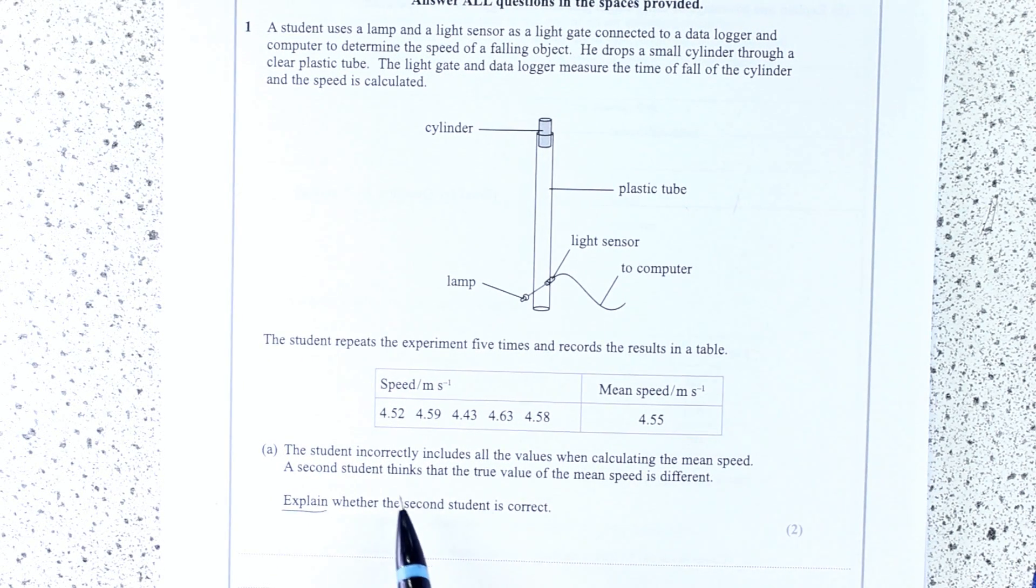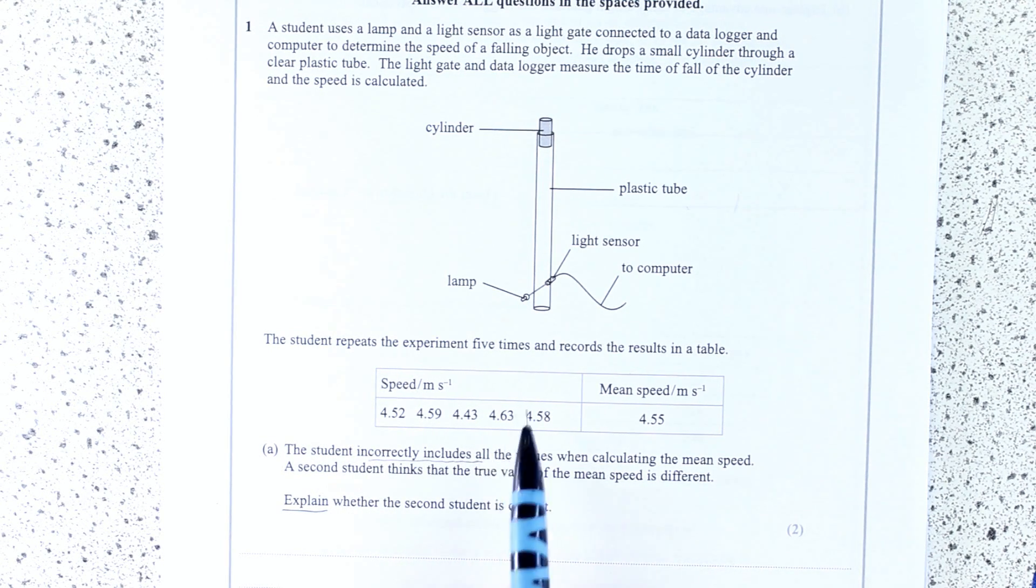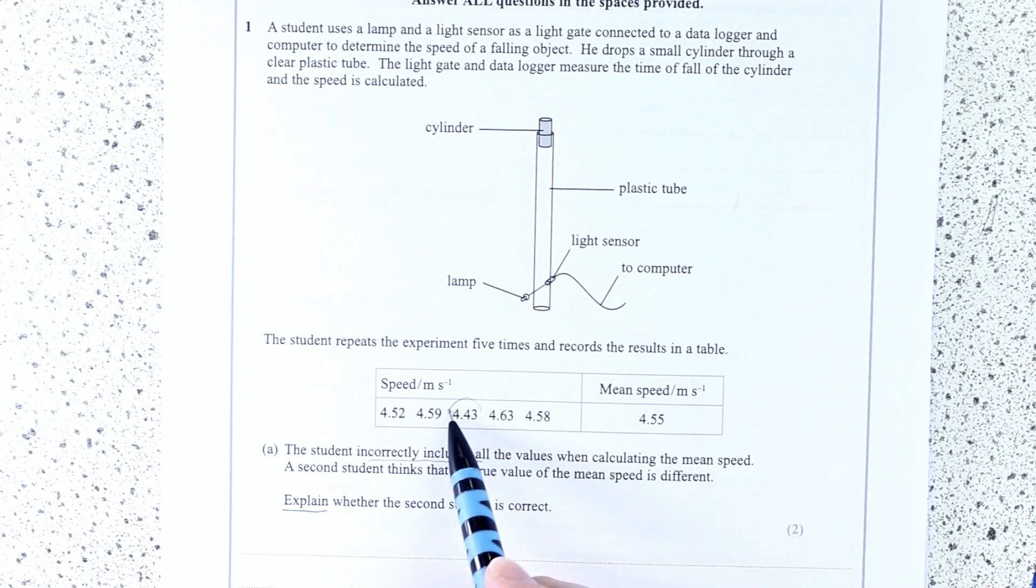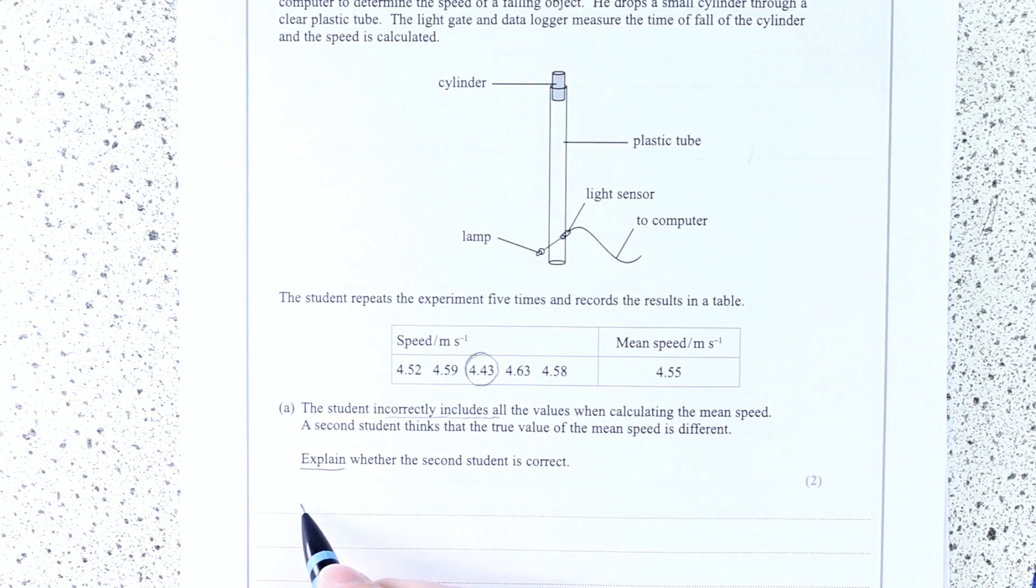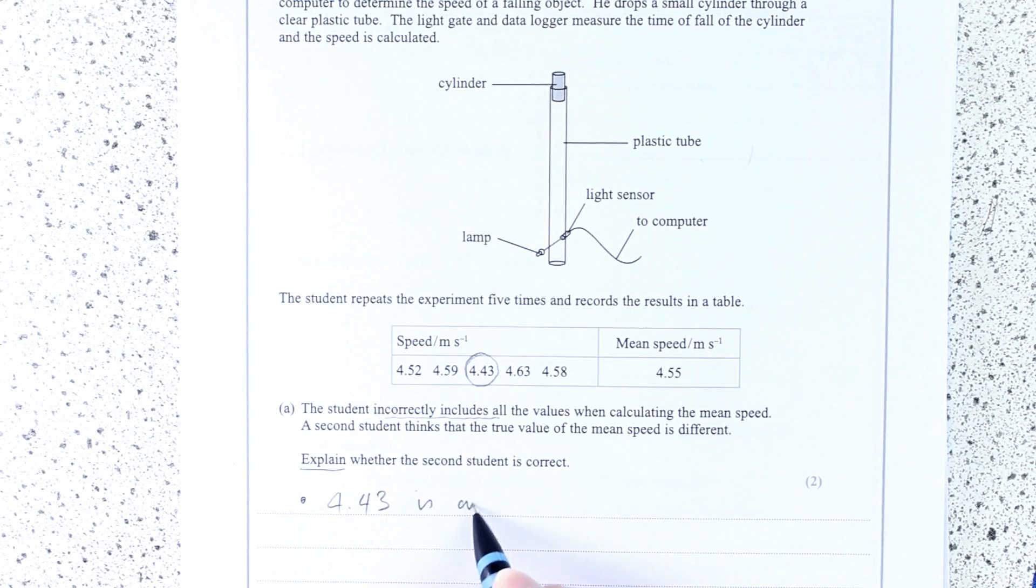Well, we know he's correct. We're told that he shouldn't have included all the values. So really it's a case of recognizing that something is wrong here. Why is that one anomaly and not the others? Well, these are all in the point fives and early point sixes, but this is way down in the early point fours. So this is considerably lower than any of the others. So your first mark is just for pointing out that 4.43 is an anomaly.